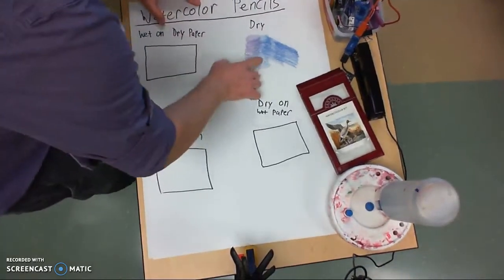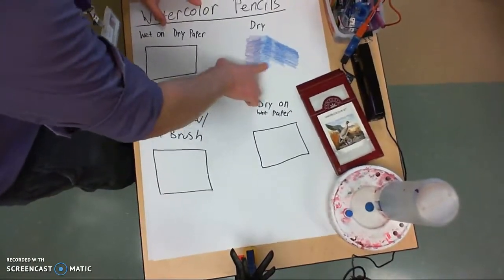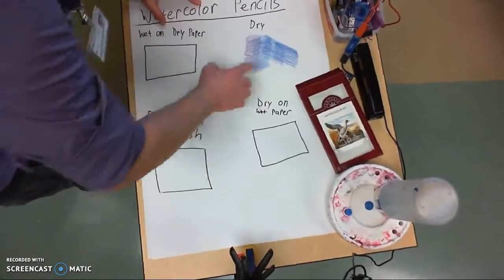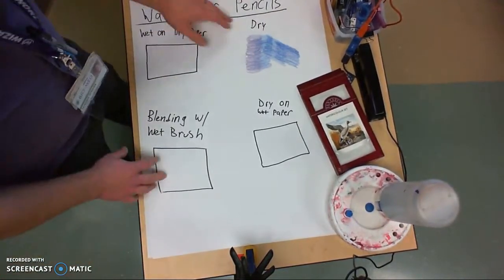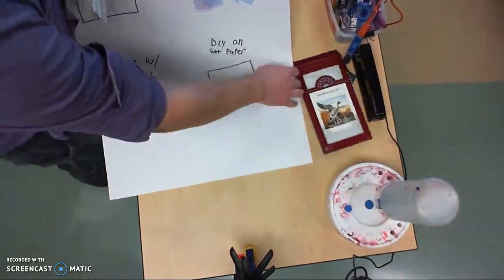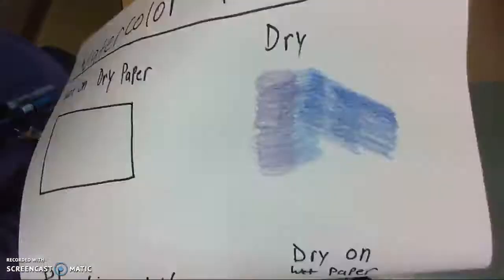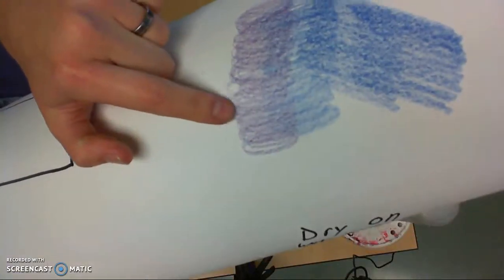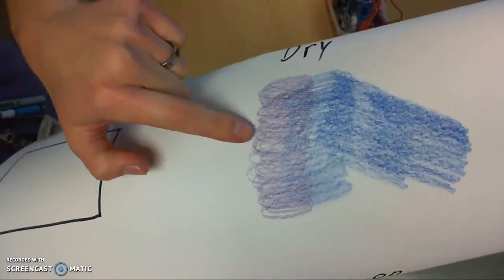You can also take your finger and you can kind of smudge and blend using pretty good pressure here. You can see how that creates a little bit of a softer blend. Let me bring my paper up to the camera. Down here at the bottom it creates a softer blend rather than up here where it's just the raw pencil.